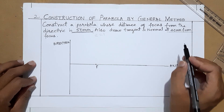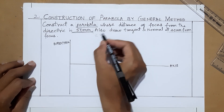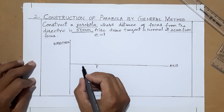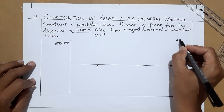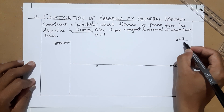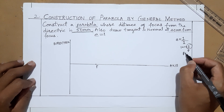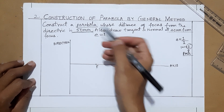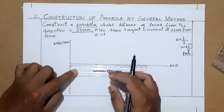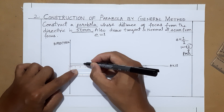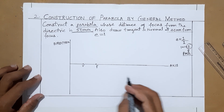For a parabola, eccentricity is always 1. Using the eccentricity method: 1 divided by 1, add numerator and denominator to get 2, so divide the 50 mm length into 2 equal parts, giving 25 mm. Mark this midpoint as the vertex V. So vertex V is at 25 mm and focus F is at 50 mm from the directrix.